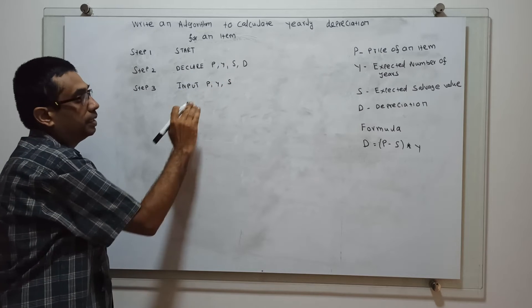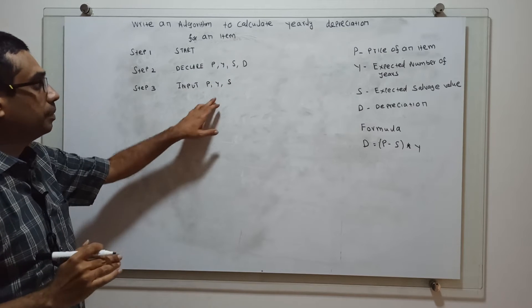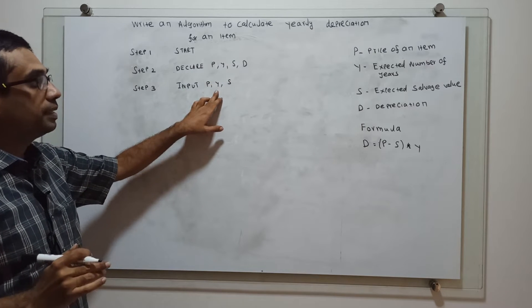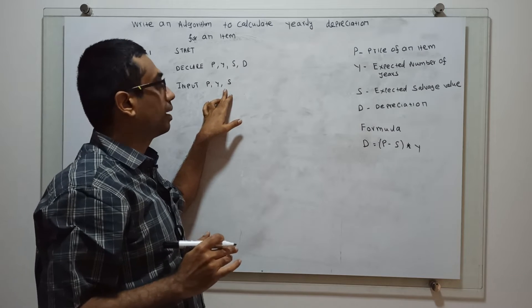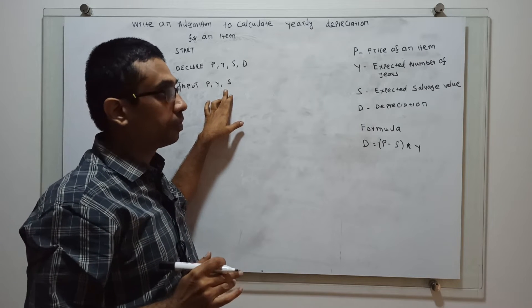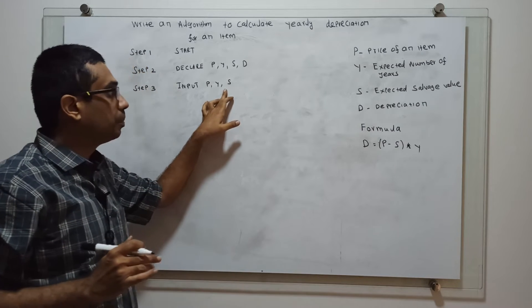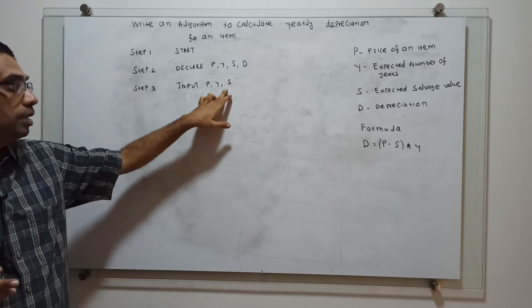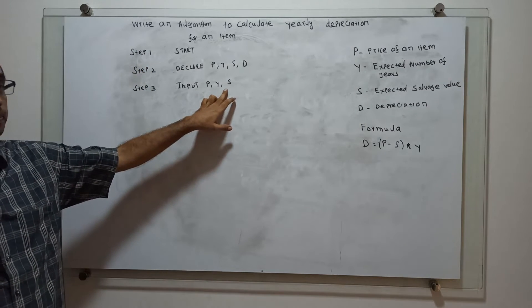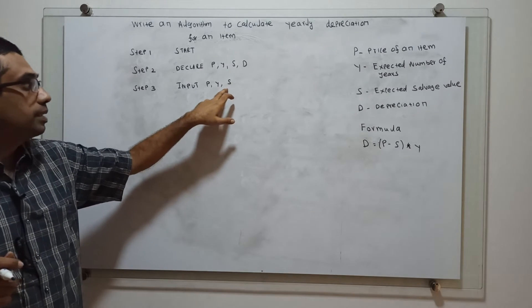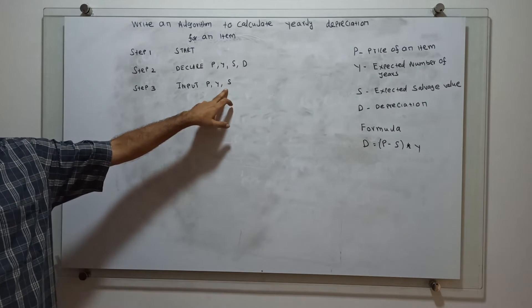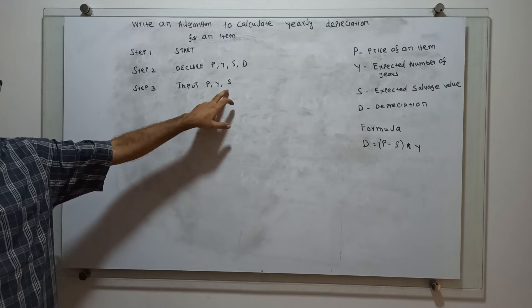P is the price of an item. Y is the expected number of years. S is the expected salvage value — that means the book value of depreciation. These are the three variables I am obtaining as input.